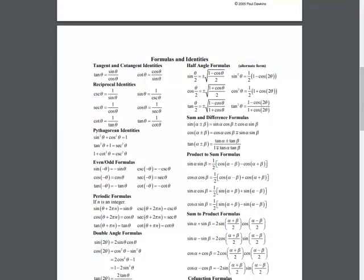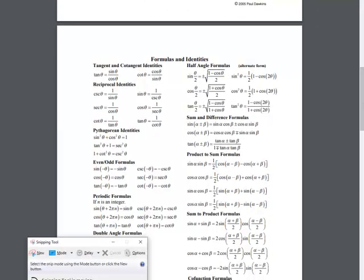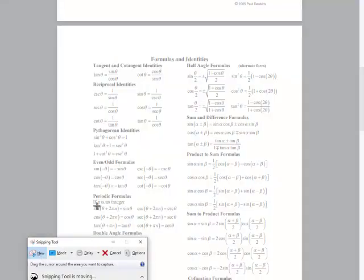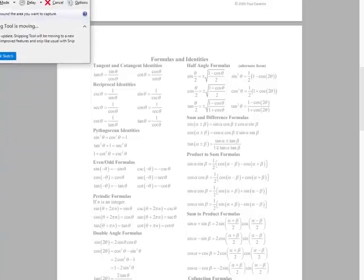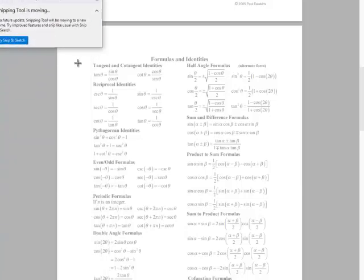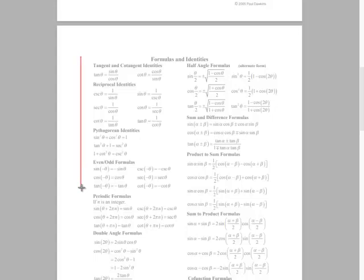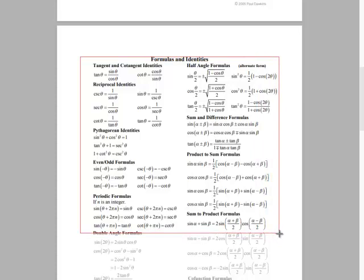So I'm just going to go to my snipping tool, and if you go to any computer, it has this snipping tool. So I'm going to go to New here, and all I'm going to do is go to the pieces that I want. So the pieces that I want are these identities right here, so I'm just going to capture them all the way down. I don't need double angle formulas. So here I've captured those things that I wanted.